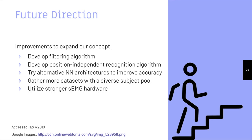There is definitely room for improvement with our application. Developing a better filtering algorithm will greatly help by removing consistent noise and allowing more flexibility in casual environments. A position-independent recognition algorithm could also be implemented to give more freedom in where the Myo band is placed. Trying different neural network architectures seen in previous works could improve accuracy for our gesture set. Additionally, datasets were only gathered from the two of us, which could lead to overfitting, so gathering more datasets from a more diverse group of subjects would be a great improvement.